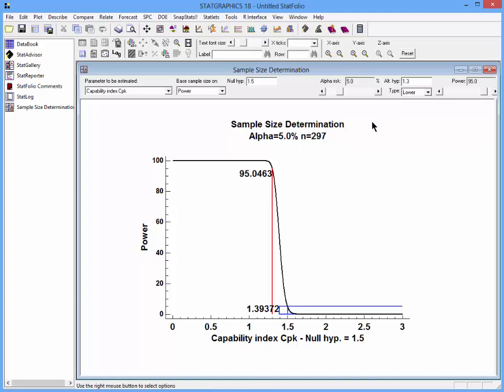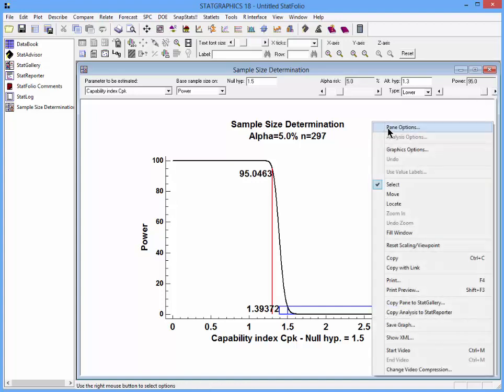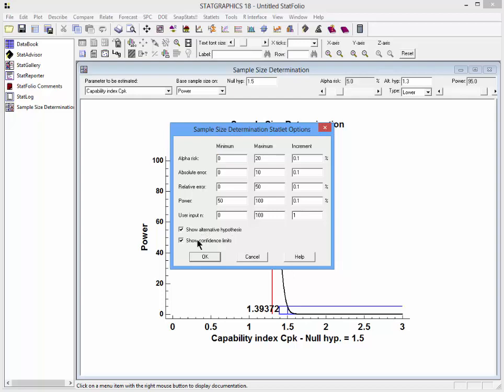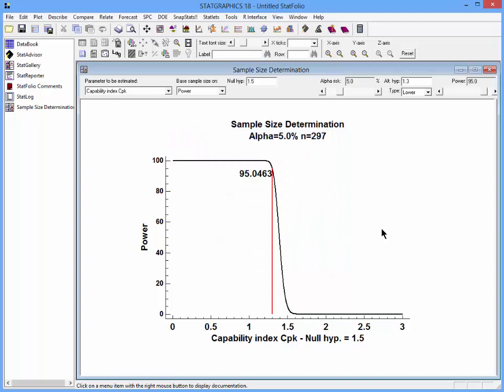Once I've done that, I'll then press my right mouse button and go to Pane Options. This time I'll turn off the confidence limits but leave the alternative hypothesis on.